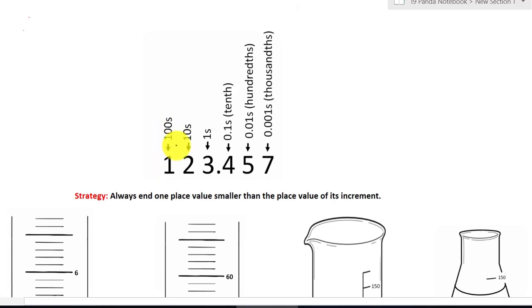We have hundredths, tenths, ones. After the decimal, the number gets smaller than one. Here we have tenth, that means one over ten. Here we have hundredths, one over a hundred. Last one, thousandths, that means one over a thousand.